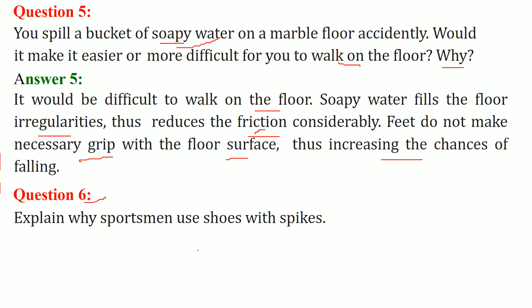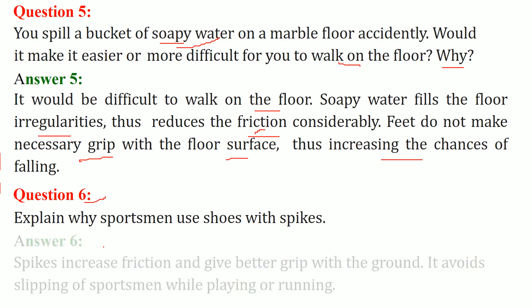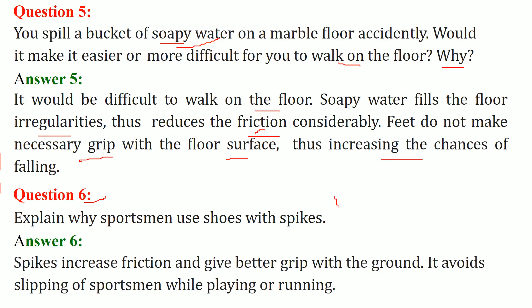Explain why sportsmen use shoes with spikes. The spikes are on the bottom of the shoes because players are always playing and running. If they have plain or slippery shoes without spikes, they will not be able to grip and will tend to fall down. Spikes increase friction and give a better grip with the ground.